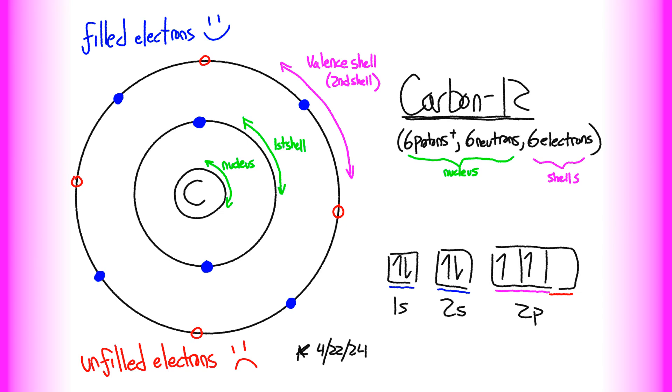The next two shells can hold 8 electrons, the next two after that can hold 18, and the last two can hold 32. However, and this is very important, the outermost shell, which we call the valence shell, can only hold 8. The valence shell is the most important one, and it decides a lot about the properties of the element.